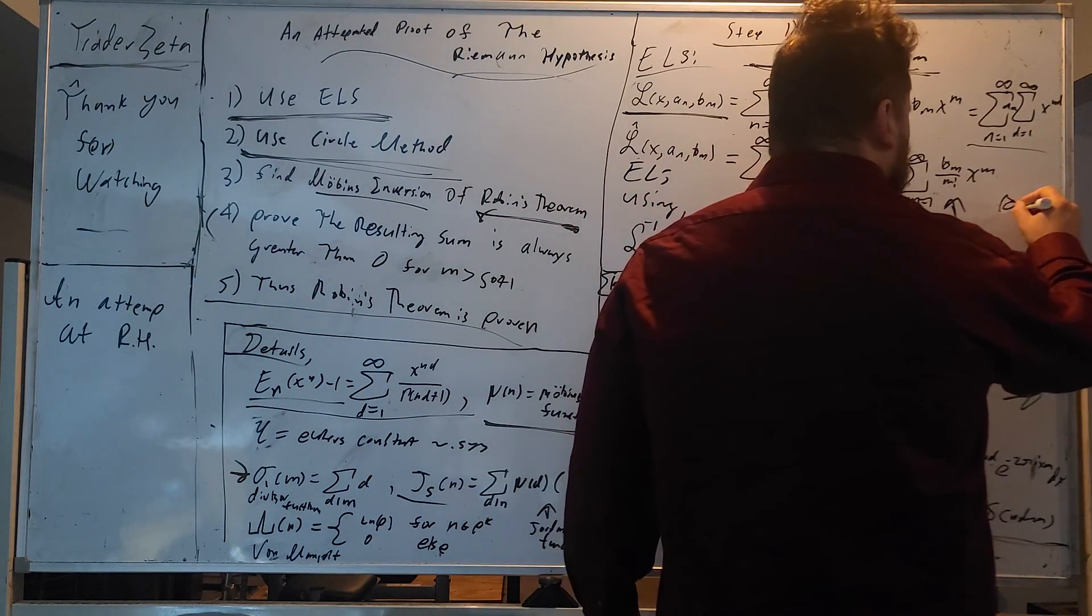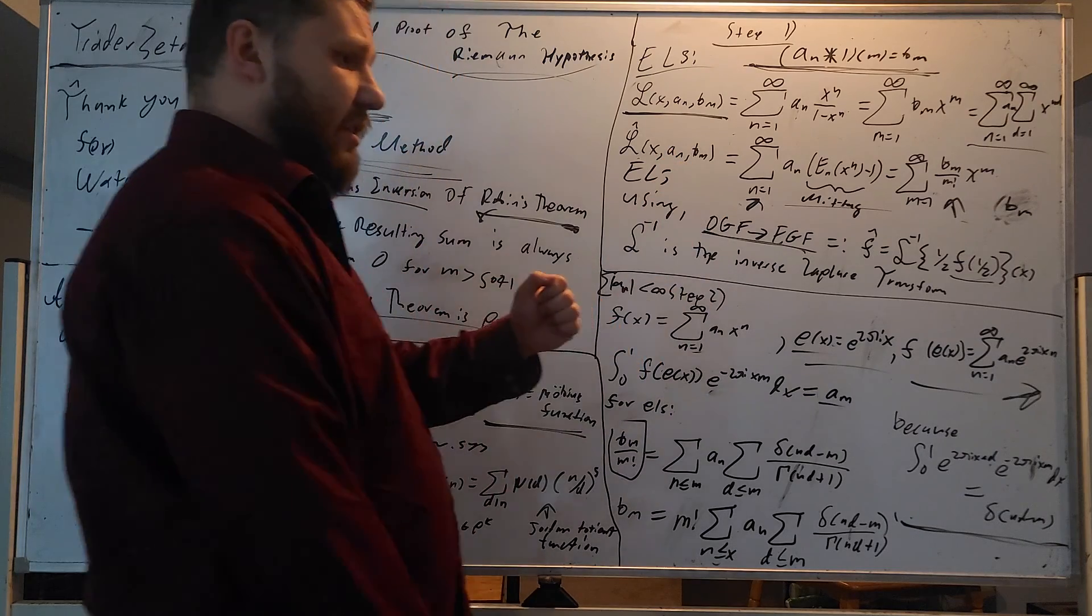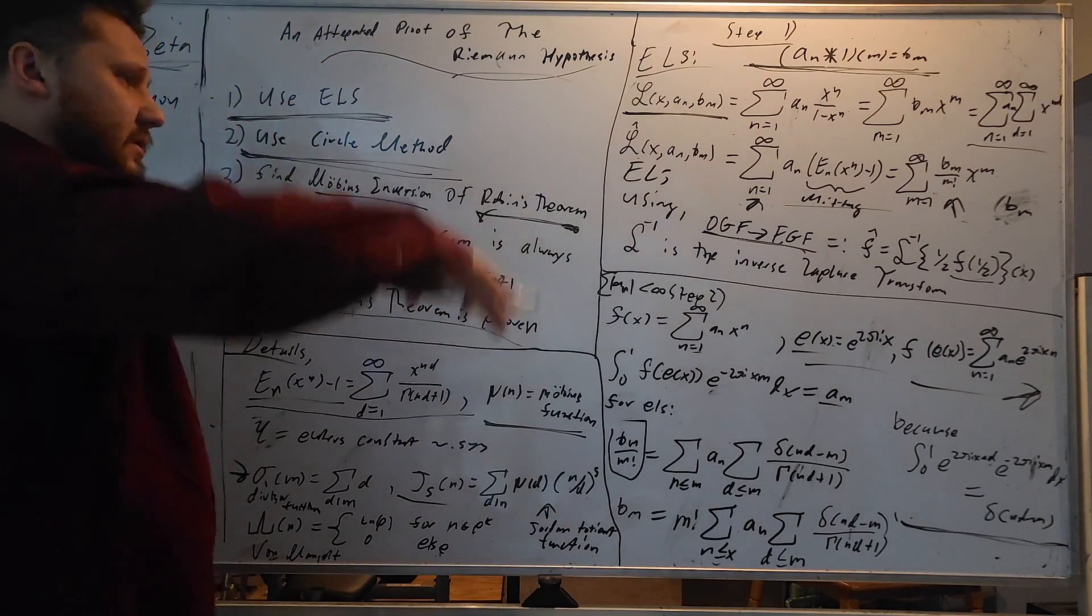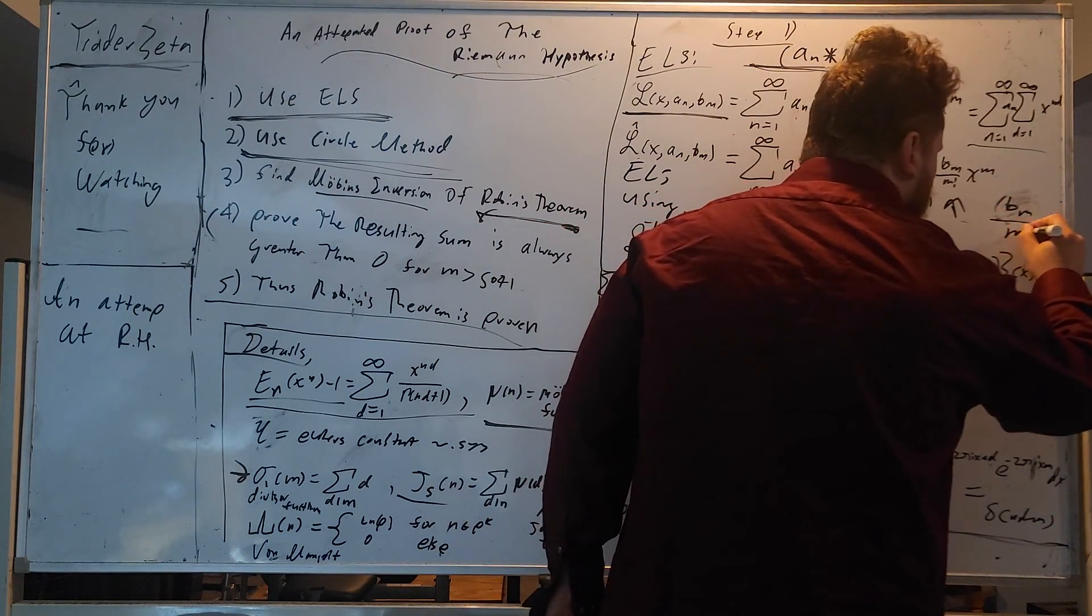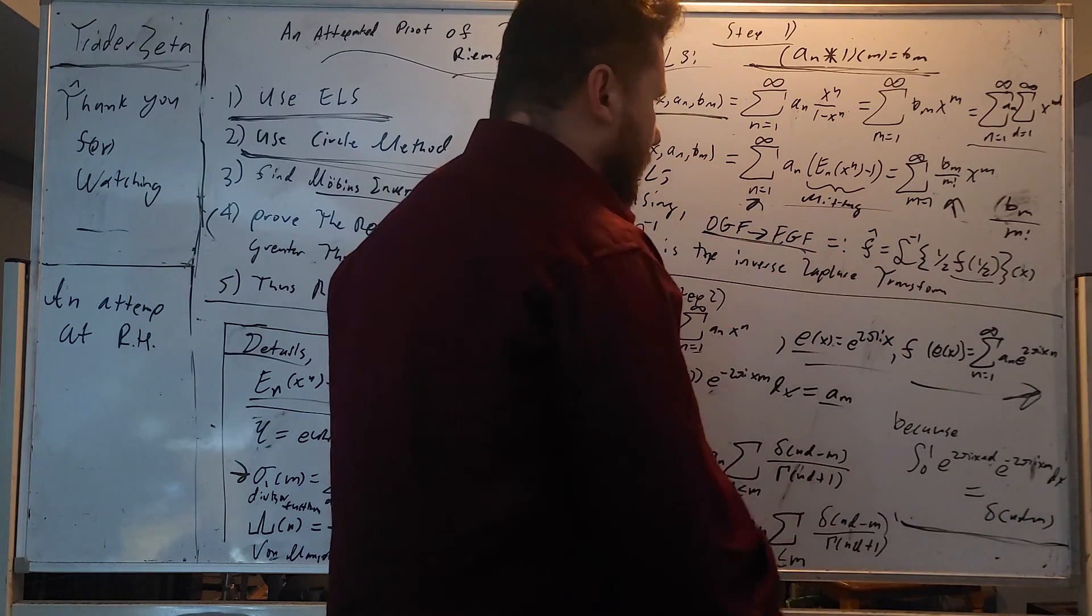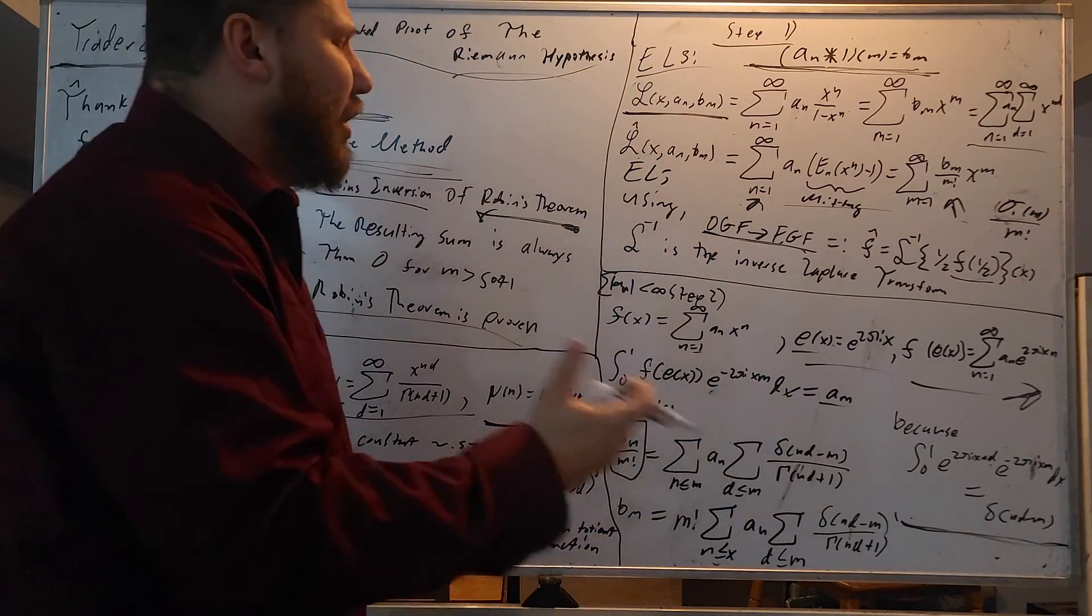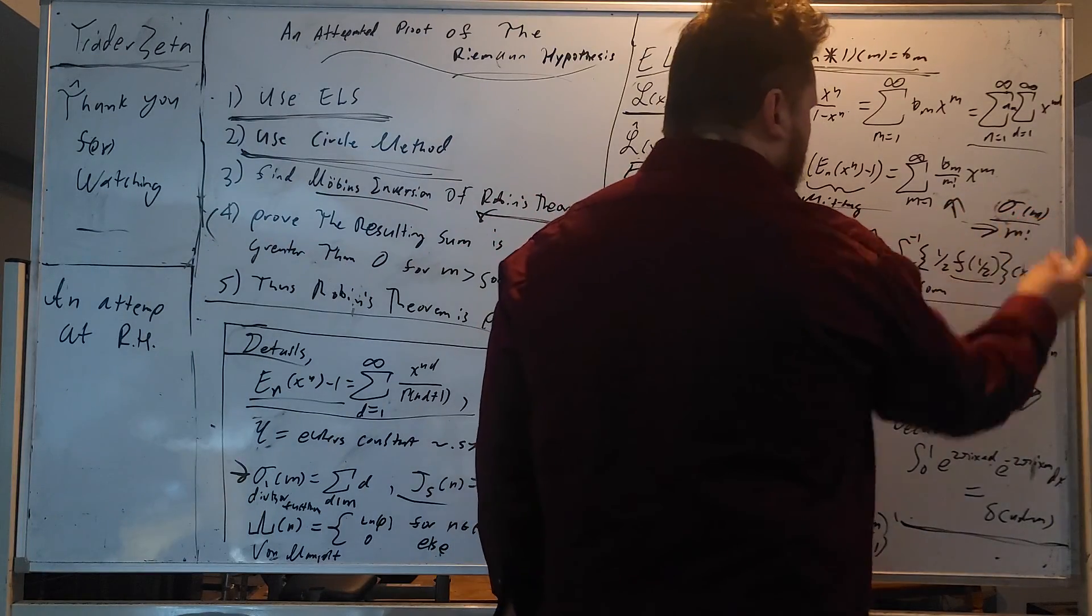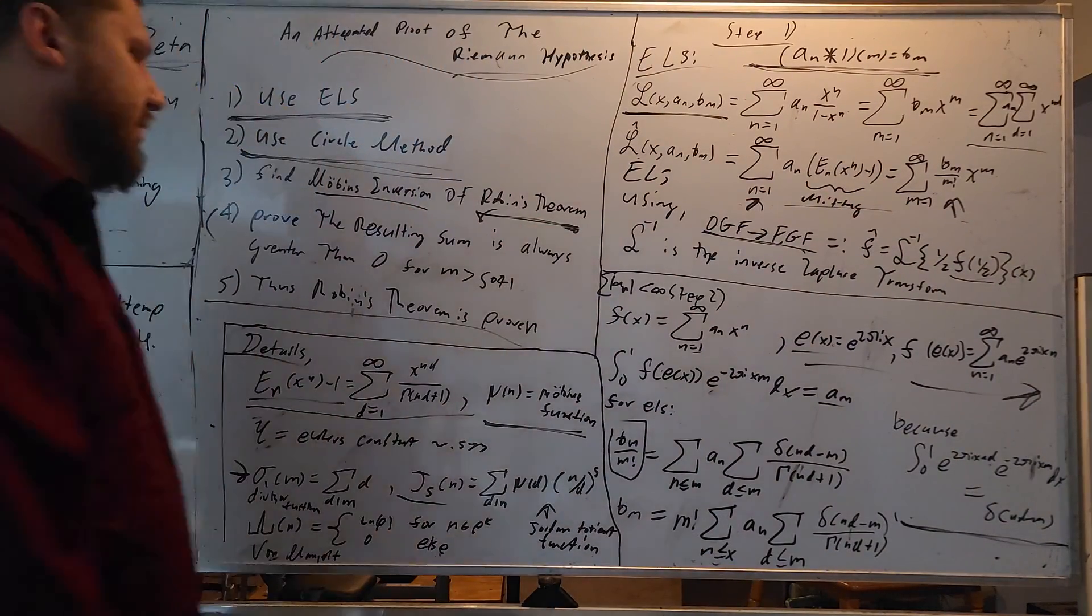So let's go to our details really quick. The Mittag-Leffler function, or at least this form of it, e sub n times x to the n minus one is sum d equals one to infinity, x to the n d, divided by gamma n d plus one. Very cool. So this representation, this series, is very nice.